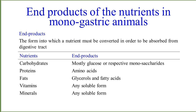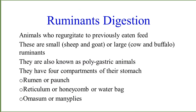Vitamins and minerals are required in minute quantities but are very essential for the proper functioning of the body. These can convert into soluble forms. Regarding ruminant stomach compartments: the rumen is a pouch-like structure, the reticulum is honeycomb-like, the omasum is manyplied, and the abomasum is the true stomach.